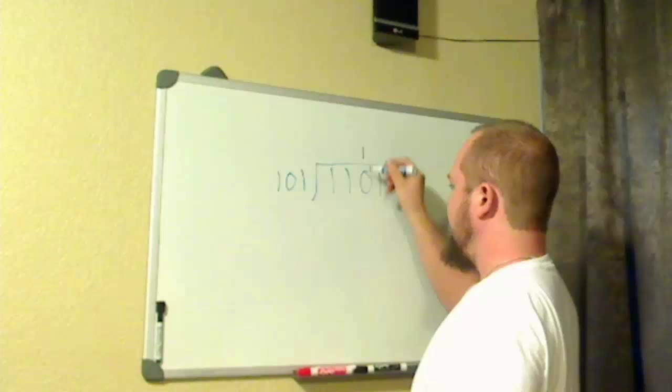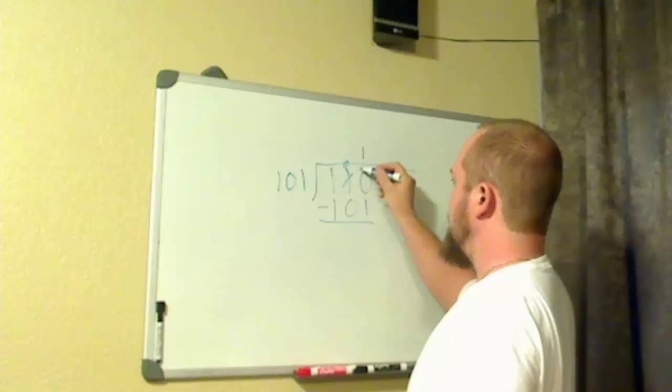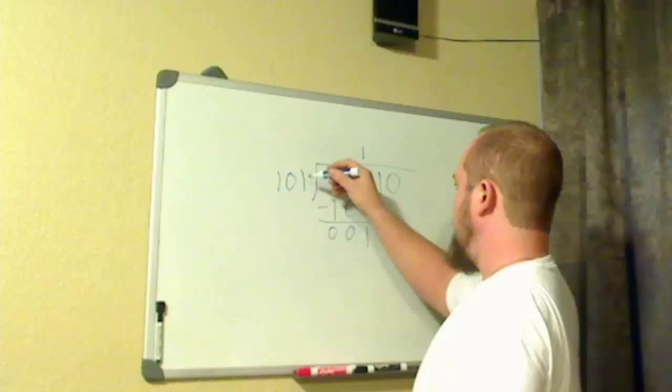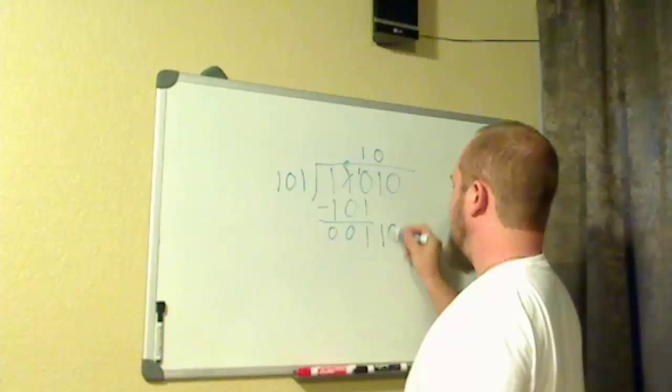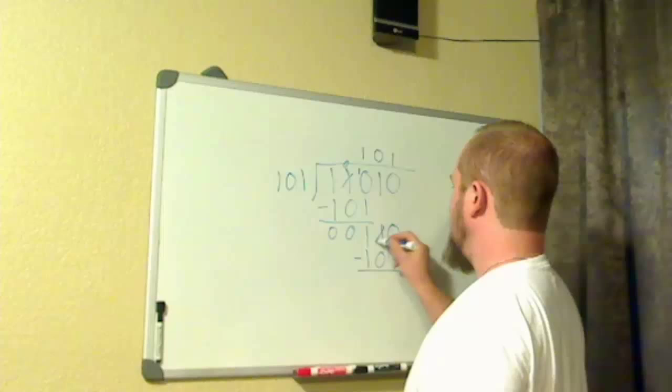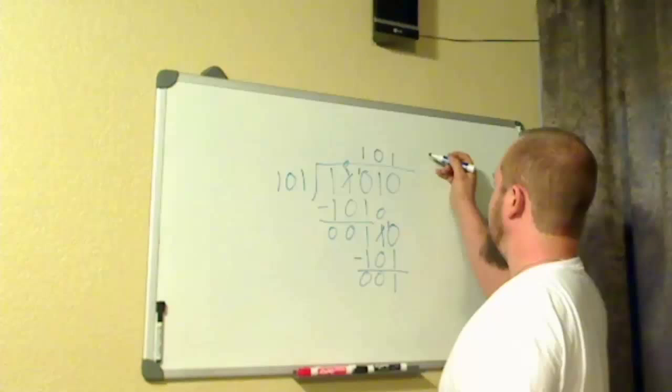Then we come over here. We bring 101 down. We subtract 1 from 0, can't borrow, 0 carries 2. 1 from 2 is 1. 0 from 0 is 0, and 0. Now, we bring down the next 1. We have 3. 5 will not go into 3, so it goes in 0 times. We bring down the next 0. 5 will go into 6, one time. 101 minus. 1 minus 0, take that. 0, borrow, make this a 2. 1 from 2 is 1. 0 and 0. 5 cannot go into 1, so we now have a remainder of 1. And that is how you divide in binary.